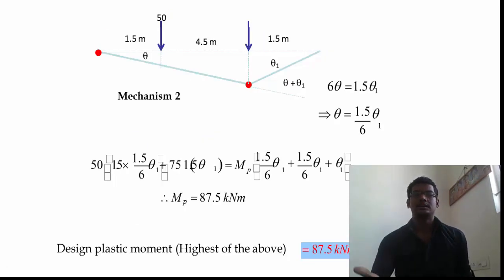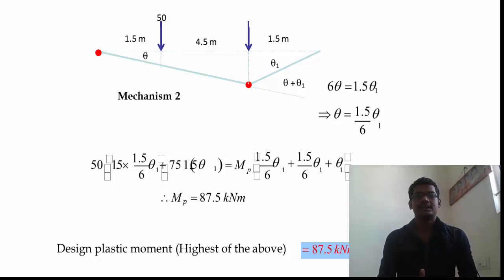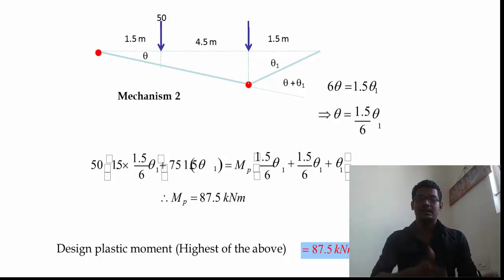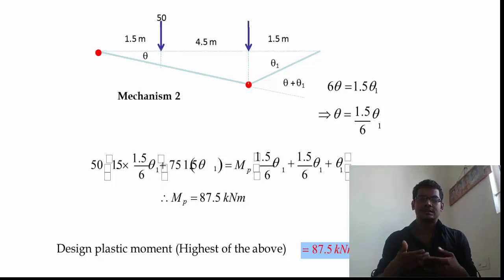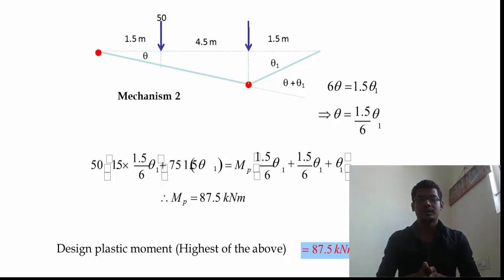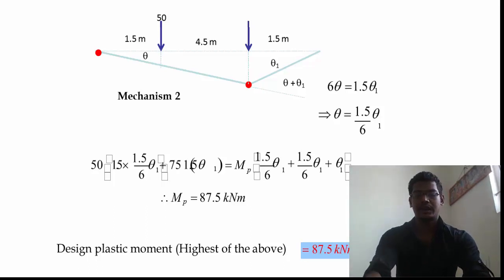For the second mechanism, 75 kN is taken as the maximum load. We find 6θ = 1.5θ₁, so θ = (1.5/6)θ₁. Equating internal and external work done, we get MP = 87.5 kN·m. Since we need to design for the plastic moment, we take the maximum value. Hence, the design plastic moment is 87.5 kN·m, and the section is selected accordingly.